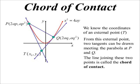Now, the thing is, the only thing we know is the coordinates of the external point. So the question is, how do we find the equation of the chord PQ, when all we know is the coordinates of this external point?